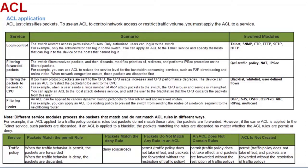Second, filtering forwarded packets: the switch filters received packets and then discards, modifies, prioritizes, redirects, and performs IPsec protection on the filtered packets. Third, filtering the packets to be sent to a CPU: if too many protocol packets are sent to the CPU, the CPU usage increases and CPU performance degrades. The device can use an ACL to restrict packets sent to the CPU. Fourth, filtering routes: an ACL can be applied to various dynamic routing protocols to filter advertised and received routes.